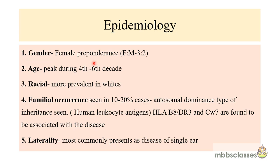Meniere's disease is found predominantly in females. The age group from the 4th to 6th decade is most commonly affected. It is more prevalent in white races. In about 10 to 20% of patients, it can run in families due to autosomal dominant type of inheritance. Human leukocyte antigens HLA-B8, DR3, and CW-7 are found to be associated with the disease. Meniere's disease most commonly affects one side — that is, most patients will have a unilateral presentation.